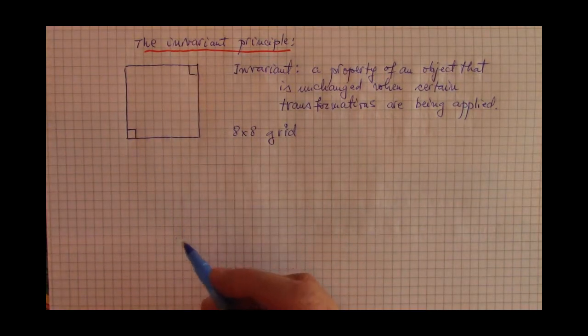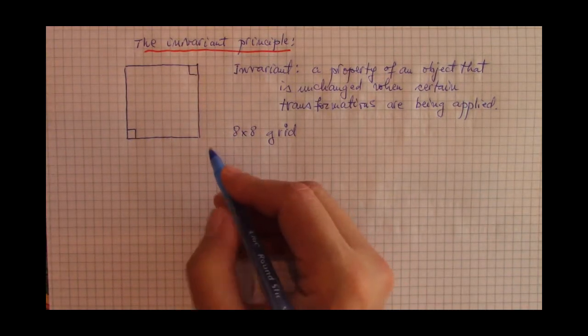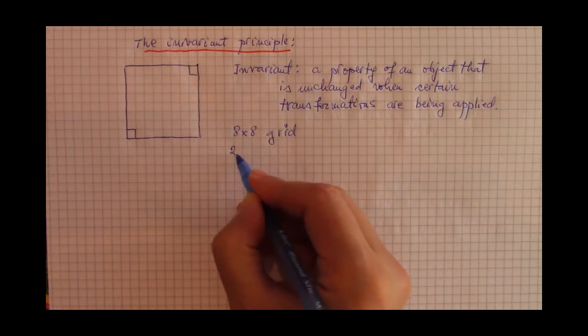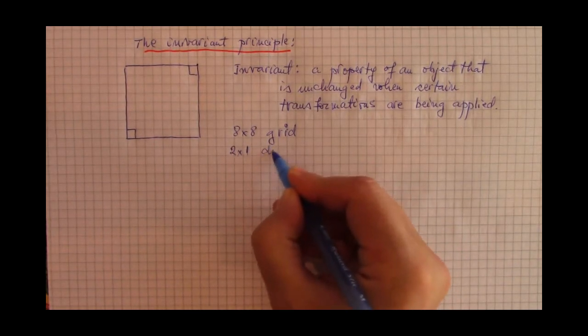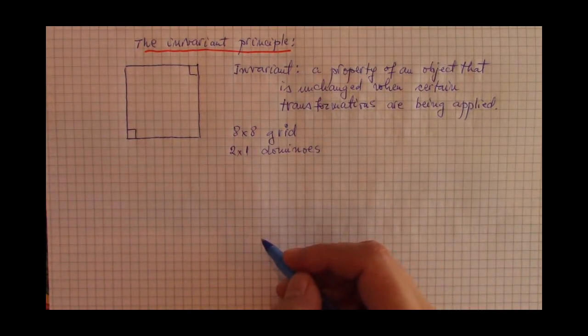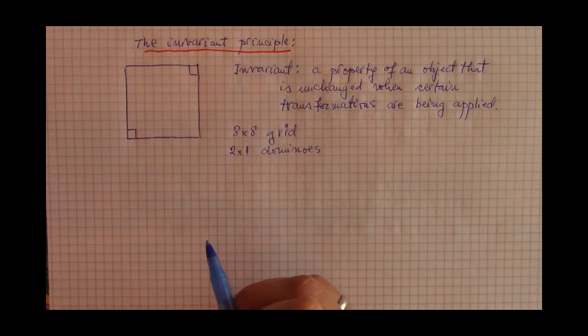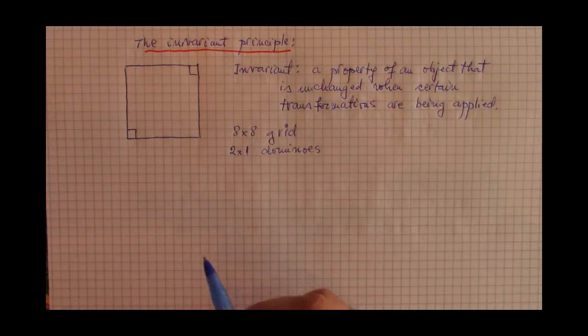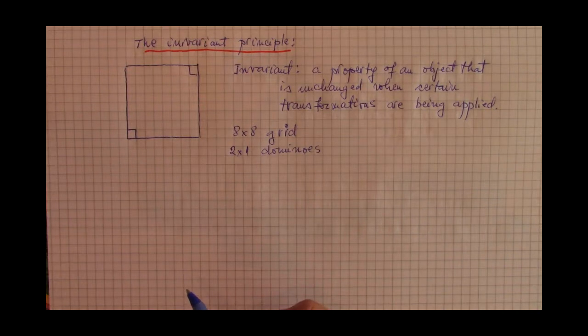Can we cover this remaining shape with two by one dominoes without overlapping? If you want, you can pause the video and try to solve the problem yourself with a clear explanation as to why it can or cannot be done.